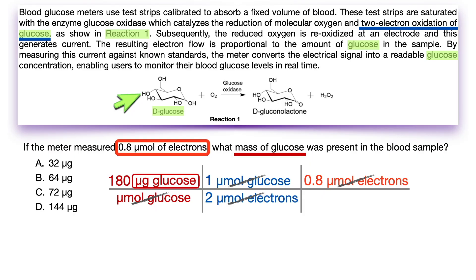And now the only units left are micrograms of glucose, which is what we need, which means we're done with the setup and all that's left to do is multiply everything on the top and divide by everything on the bottom.